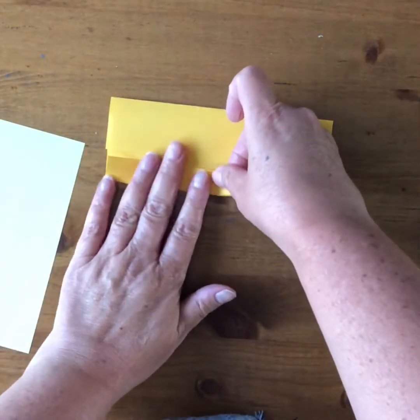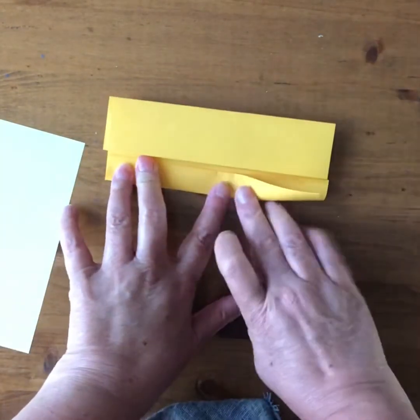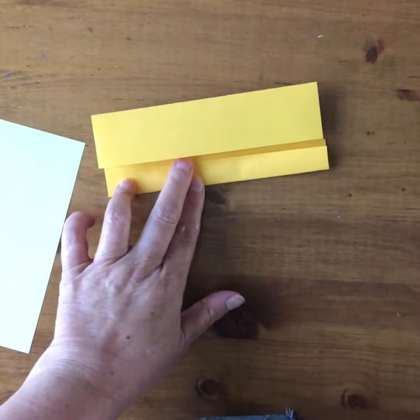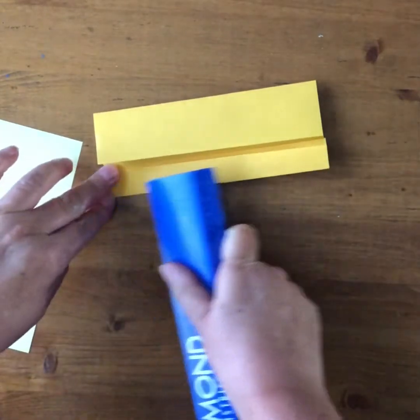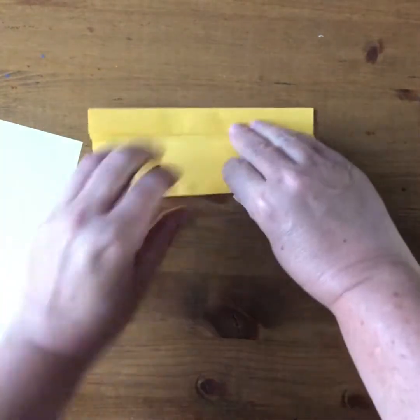And the more times you fold a piece of paper, the harder it gets to crease. So this is when bringing a ruler or something else in to help you with those creases is a good idea.